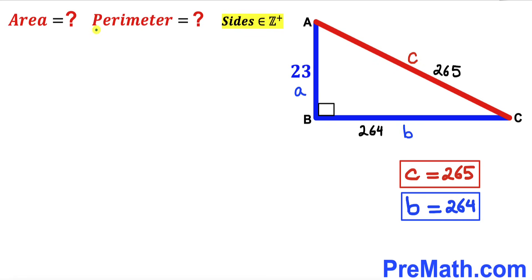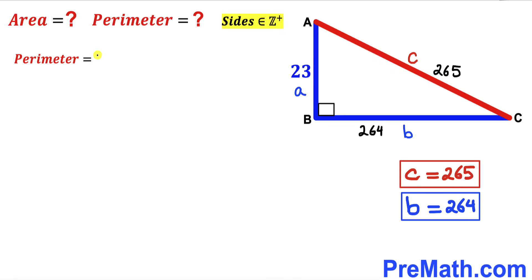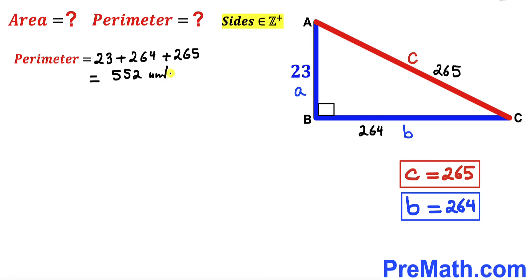Now we calculate the perimeter of this triangle. The perimeter is the sum of all three side lengths: 23 + 264 + 265, which gives us 552 units.